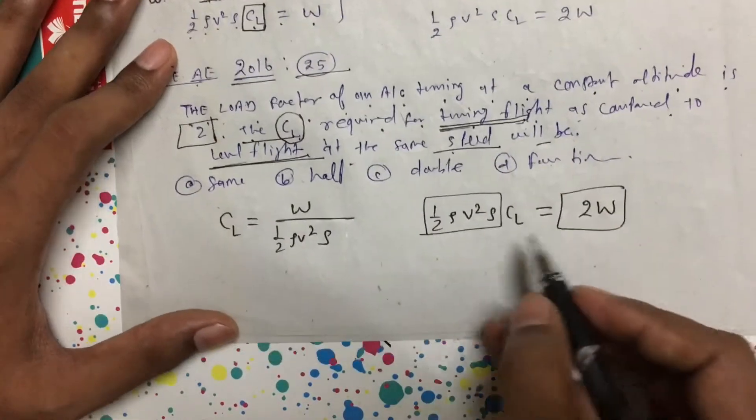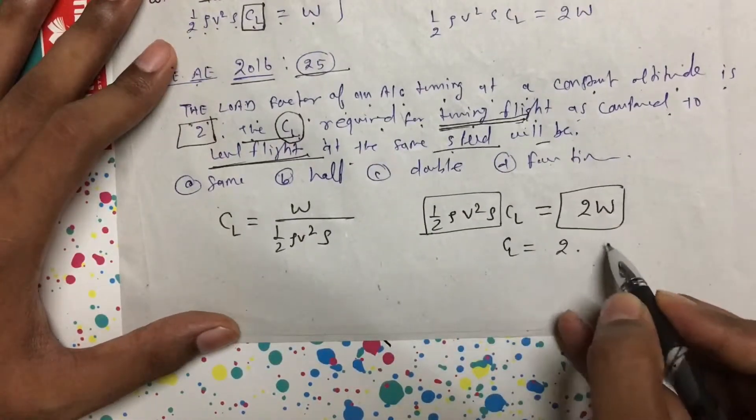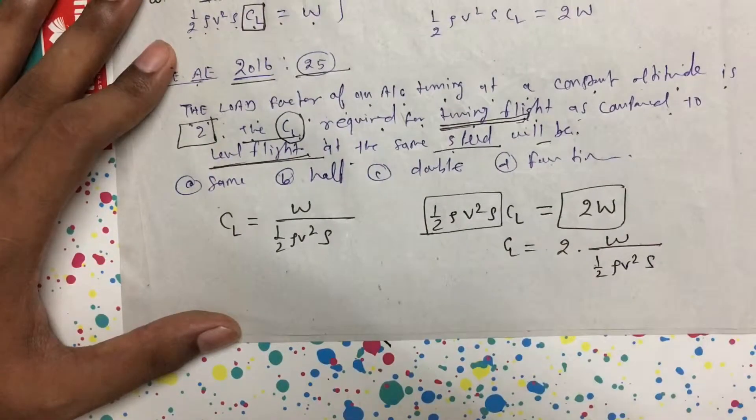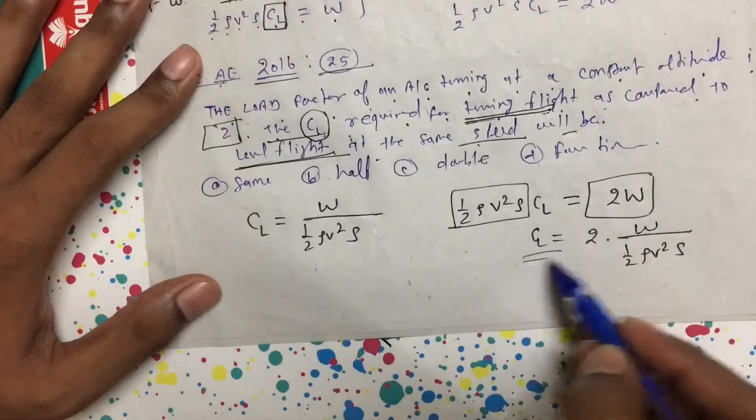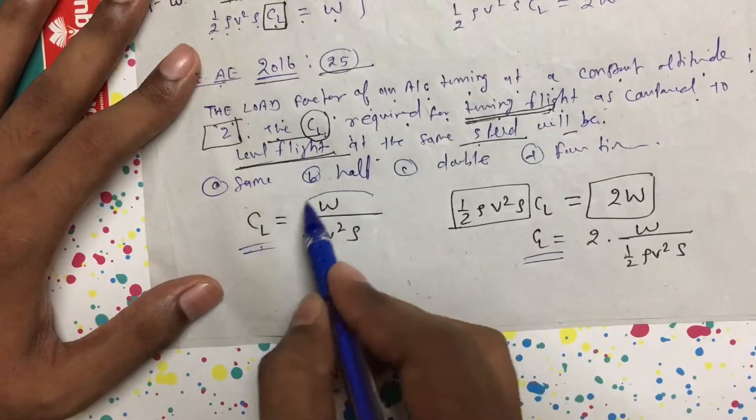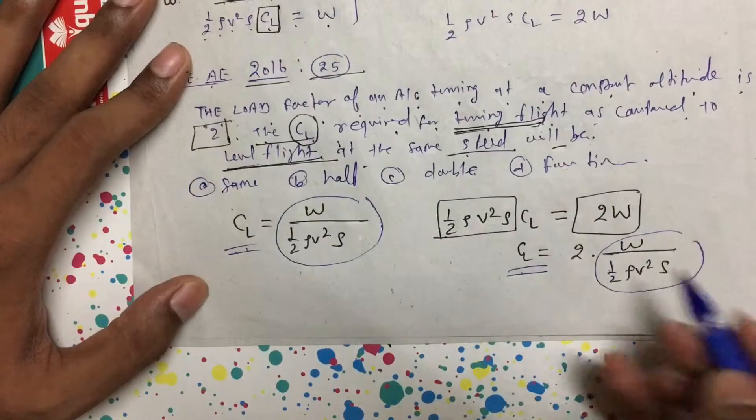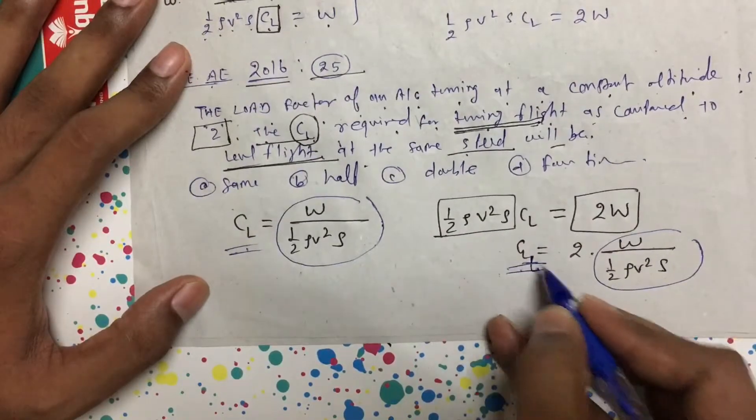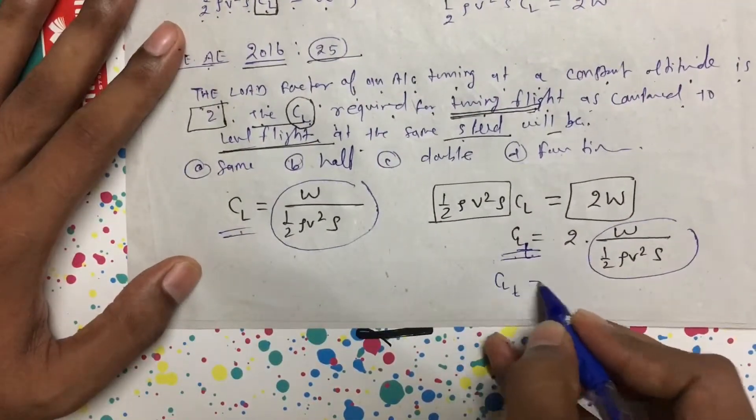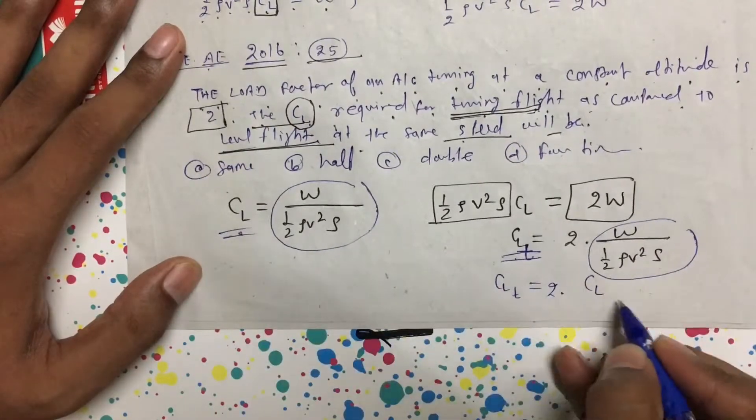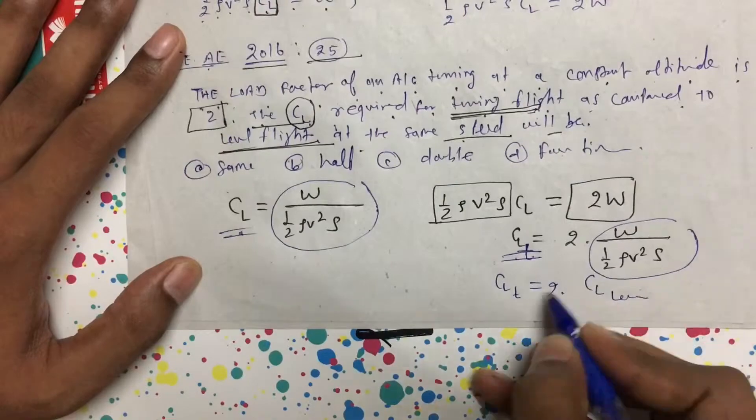So CL equals 2 times W by ½ρV²S. If you compare this CL with the previous CL—this CL is just W by ½ρV²S, and this one is 2 times that—CL of turn equals 2 times CL of level flight. So double, which is option C, is correct.